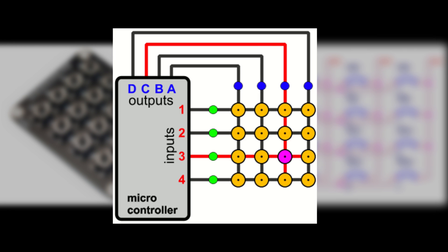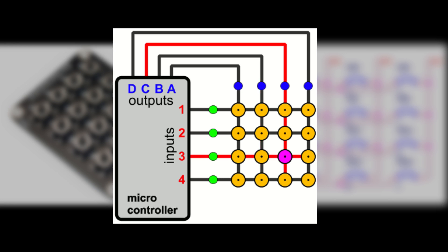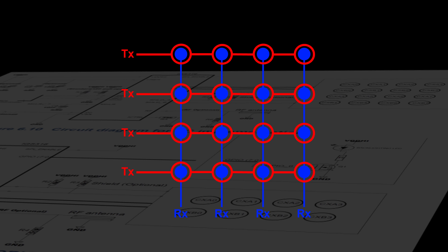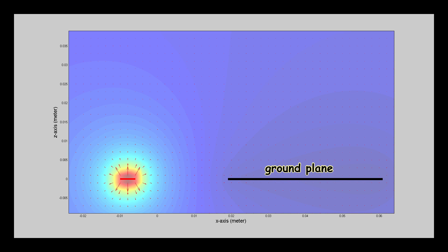Like the mechanical key matrix which uses row and column scanning to locate the switch being pressed, the capacitive sensors can use the same method for sensing. This increases the number of sensing channels with the least I/O pins.